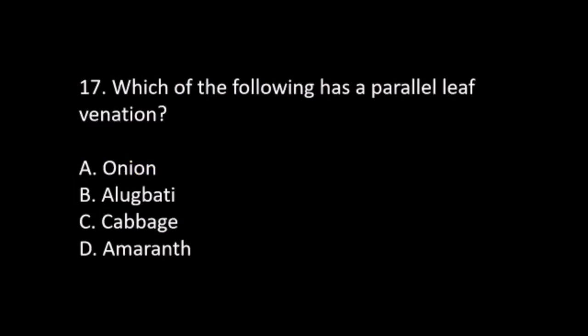Number 17. Which of the following has parallel leaf venation? A. Onion. B. Eggplant. C. Cabbage. D. Amaranth. The answer is A. Onion.